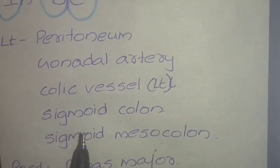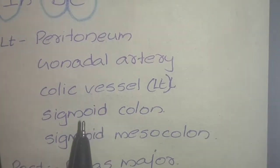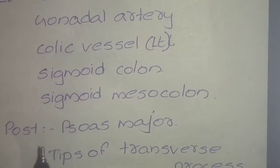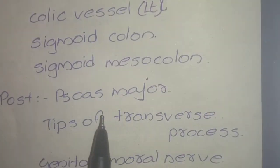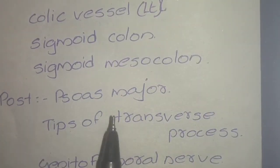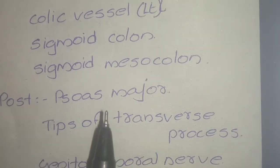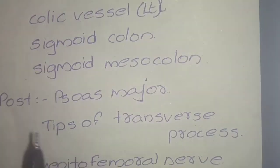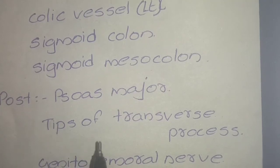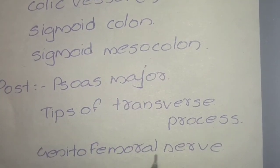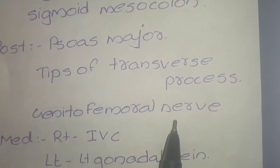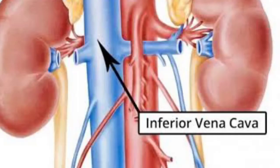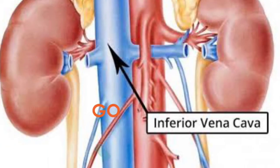Posteriorly, the relation is the psoas major muscle. It also includes the tips of the transverse processes and the genitofemoral nerve. Medially, on the right side it is the inferior vena cava, and on the left side it is the left gonadal vein.